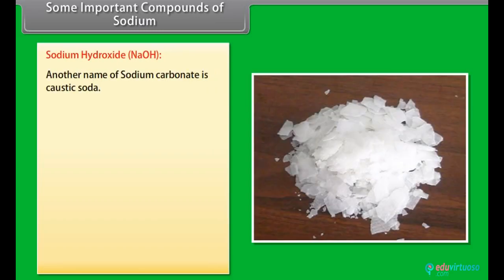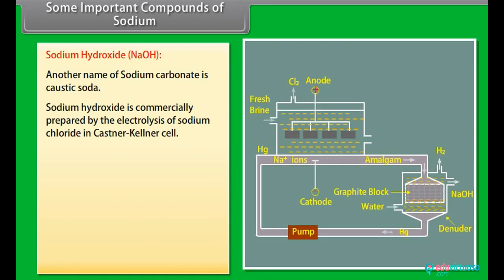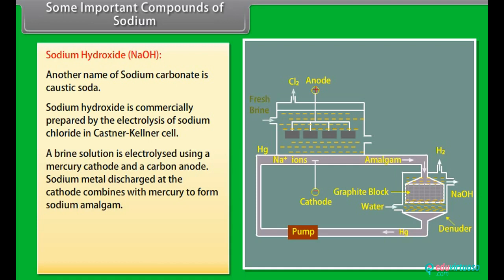Sodium hydroxide: another name of sodium hydroxide is caustic soda. Sodium hydroxide is commercially prepared by the electrolysis of sodium chloride in Castner-Kellner cell. A brine solution is electrolyzed using a mercury cathode and a carbon anode. Sodium metal discharged at the cathode combines with mercury to form sodium amalgam.